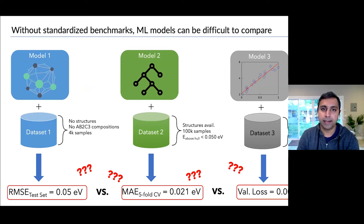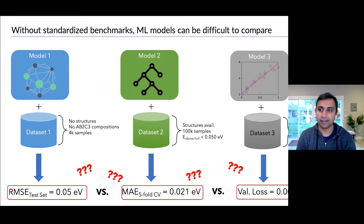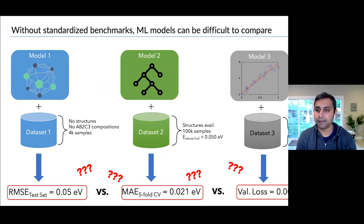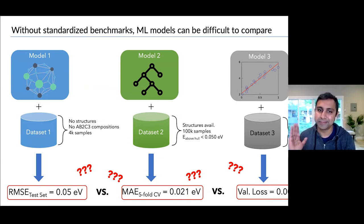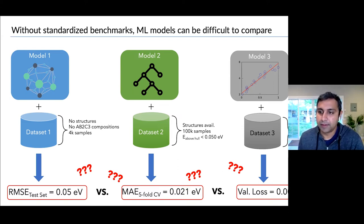One of the things we see in the literature today is that it can be very difficult to compare performance reported in papers from different machine learning models, because they're often tested on different data sets. One might be tested on formation energies without crystal structures, only chemical compositions, with 4,000 samples. Another might use a different database with structures available and many more samples, with data filters for stable compounds. And they also report errors in different ways — one model might use RMSE, another mean absolute error, another a validation loss. So it's very difficult to know which model is really performing better.